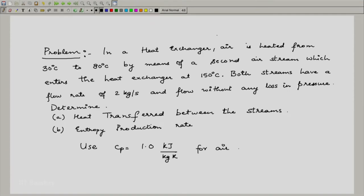In a heat exchanger, air is heated from 30 degree centigrade to 80 degree centigrade by means of a second air stream which enters the heat exchanger at 150 degree centigrade. Both streams have a flow rate of 2 kilograms per second and flow without any loss in pressure. Determine heat transferred between the streams and entropy production rate, and we have been told to use Cp for air as 1 kilojoule per kilogram Kelvin.